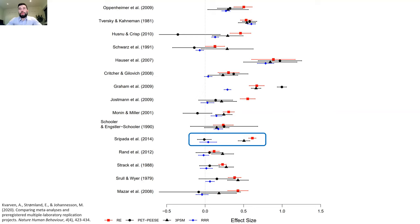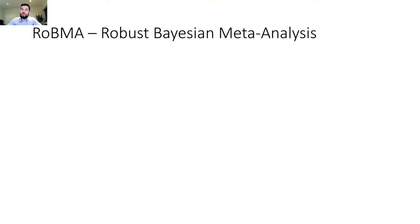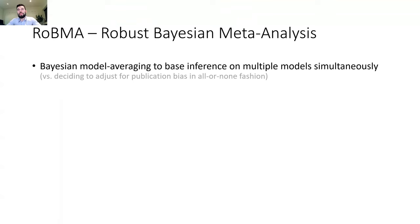The problem is that a priori it's hard to tell which estimate is better. So the question is: how should you base your inference, especially if the methods disagree on the conclusions? We argue that you shouldn't base inference on a single model. Instead, you should use robust Bayesian meta-analysis and Bayesian model averaging to base inference on multiple models simultaneously.